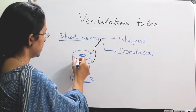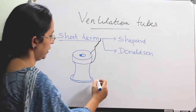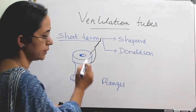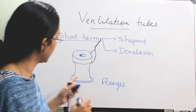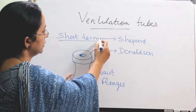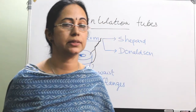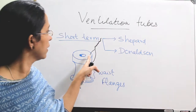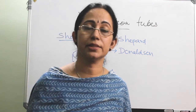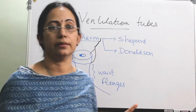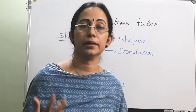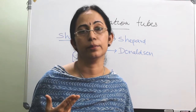The tube has two parts called flanges: an outer flange and an inner flange. Inside there is a small hole for ventilation, and the middle part is called the waist. There is also a stainless steel wire attached to the tube — either attached separately or inbuilt with the same material such as Teflon or silastic. Teflon is preferred, and the Shepherd tube is made of Teflon. The purpose of the stainless steel wire is for removal — you catch hold of the wire and remove the tube.